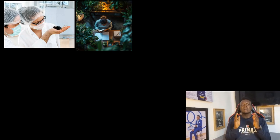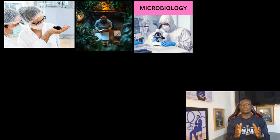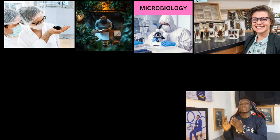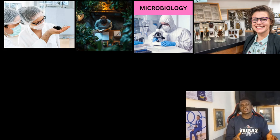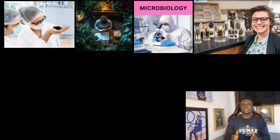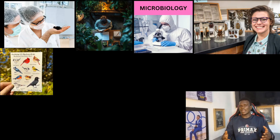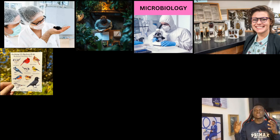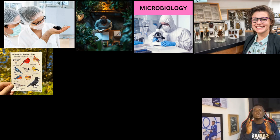There are different branches of biology. First is zoology — the study of animals. Then botany — the study of plants. Microbiology is the study of microorganisms, the minute organisms that cannot be seen with the naked eye. Entomology is the study of insects. And ornithology is the study of birds.